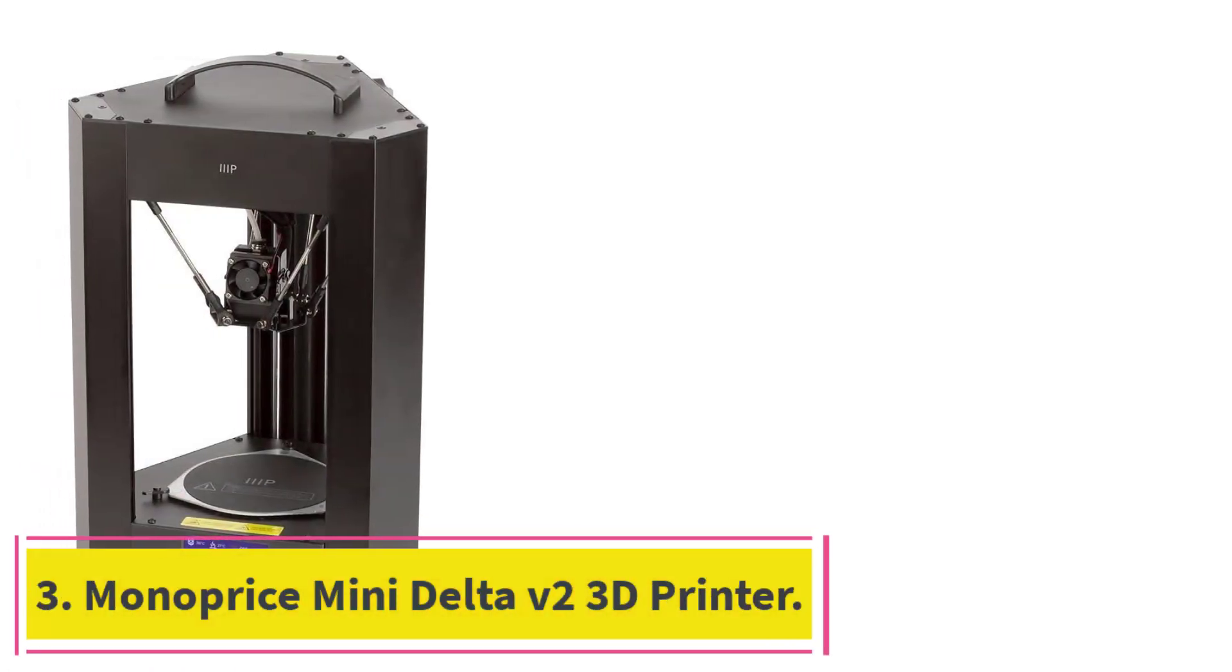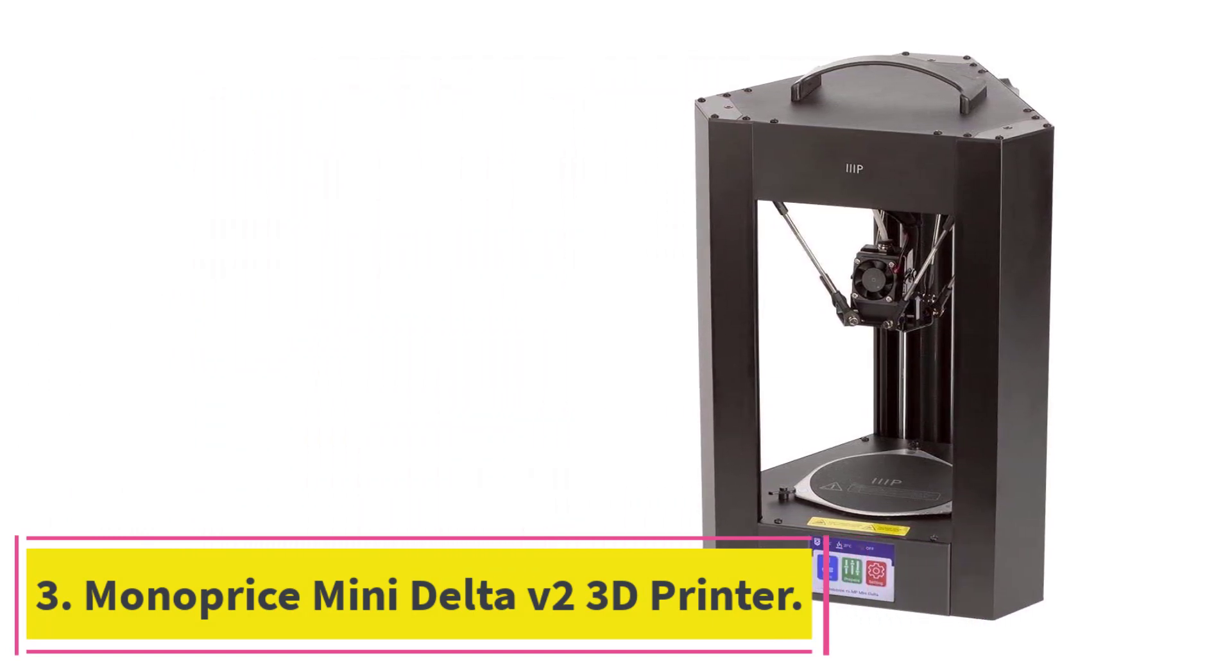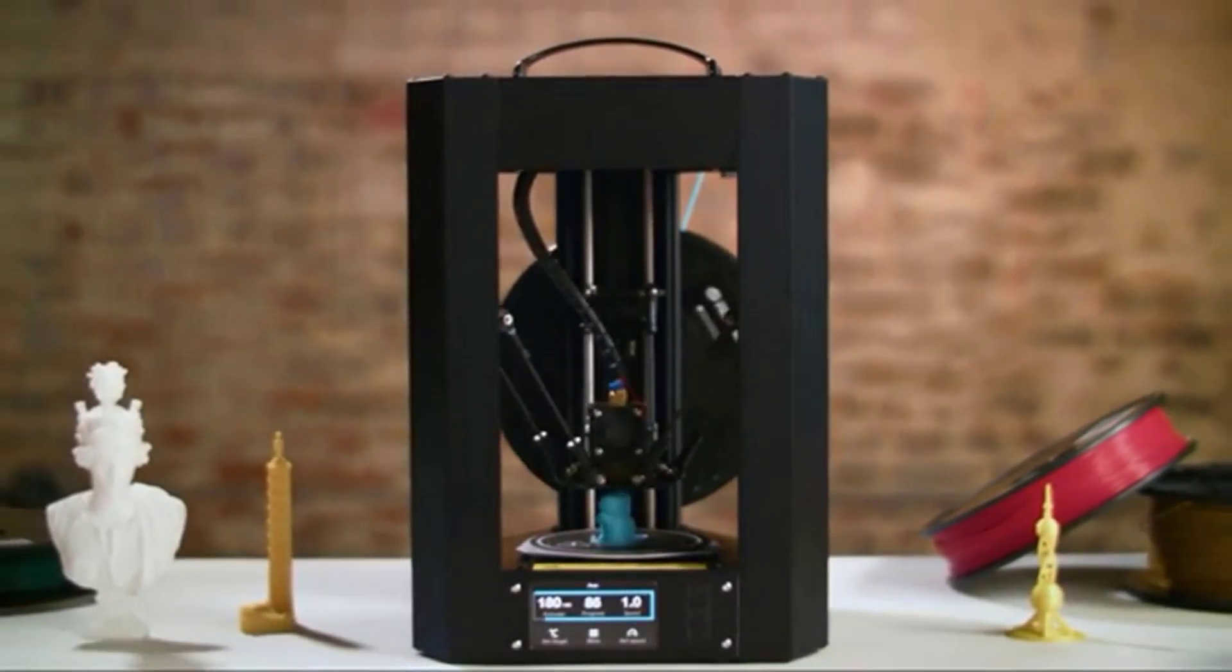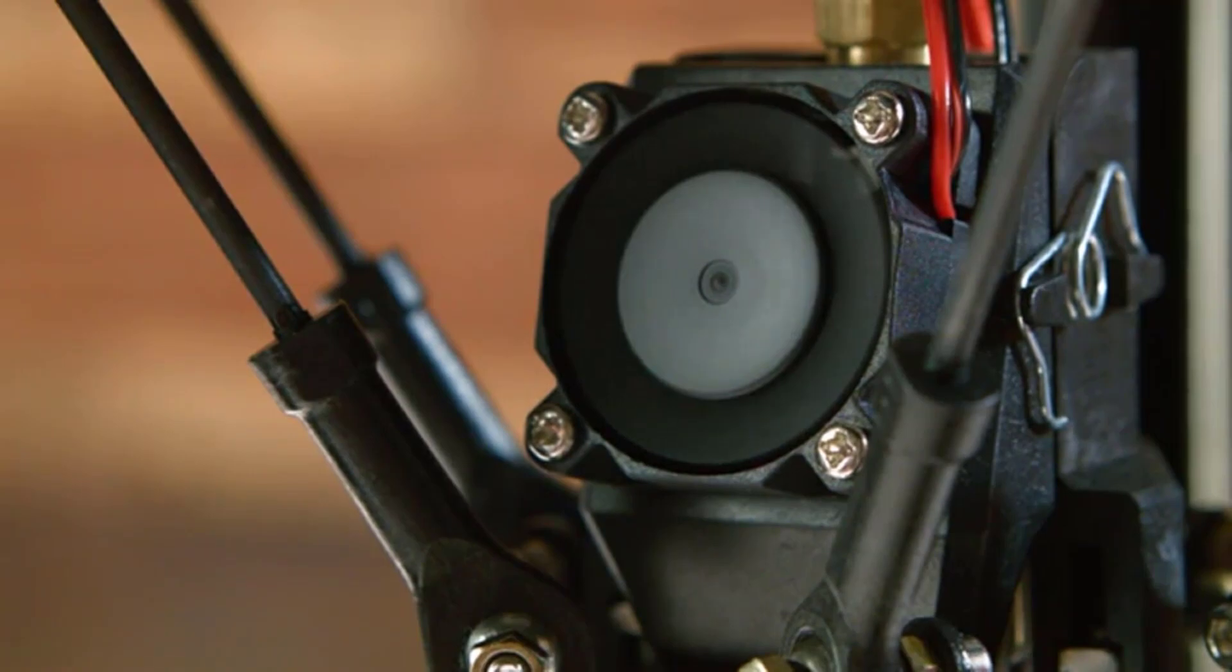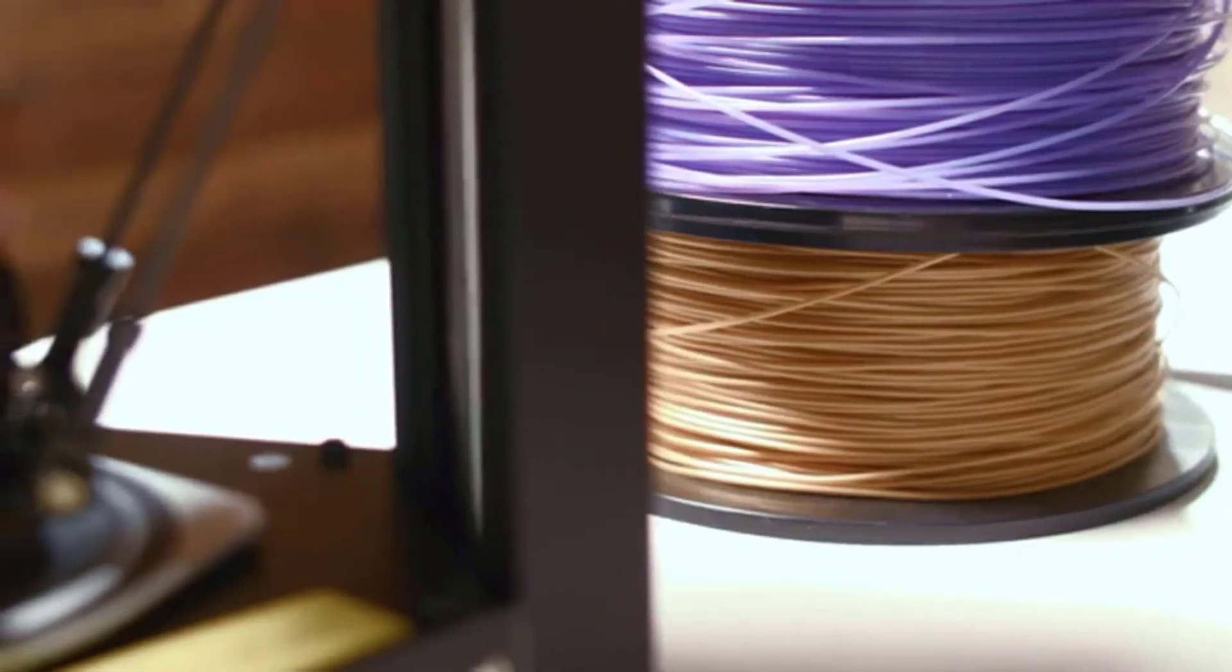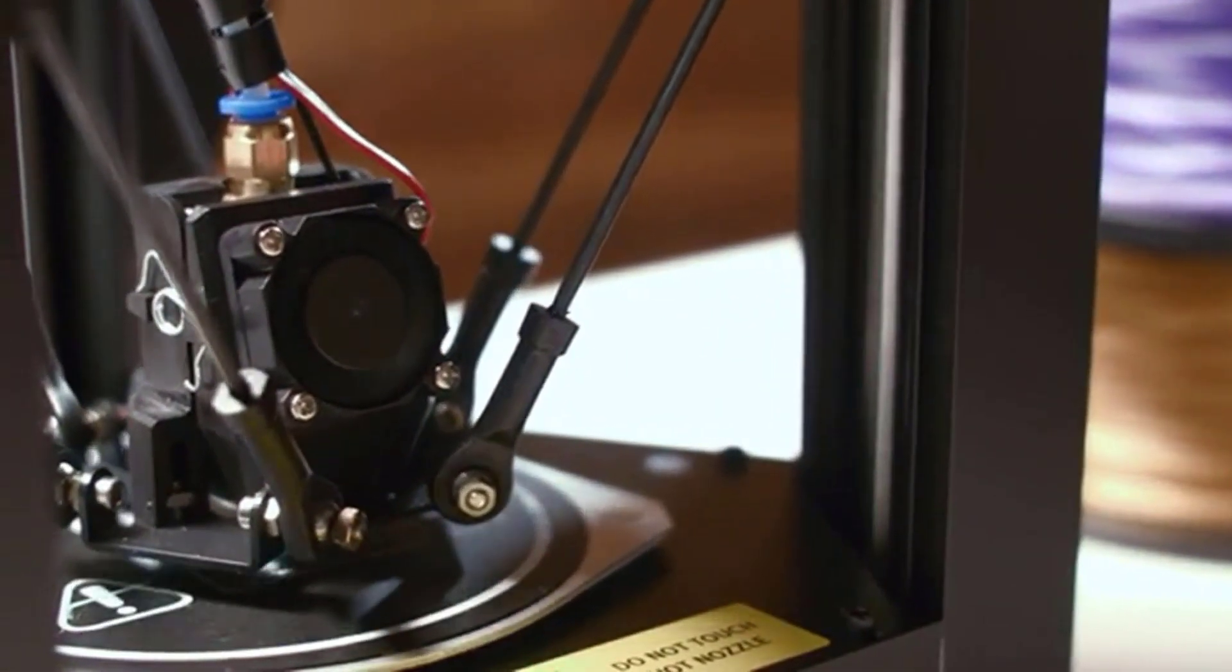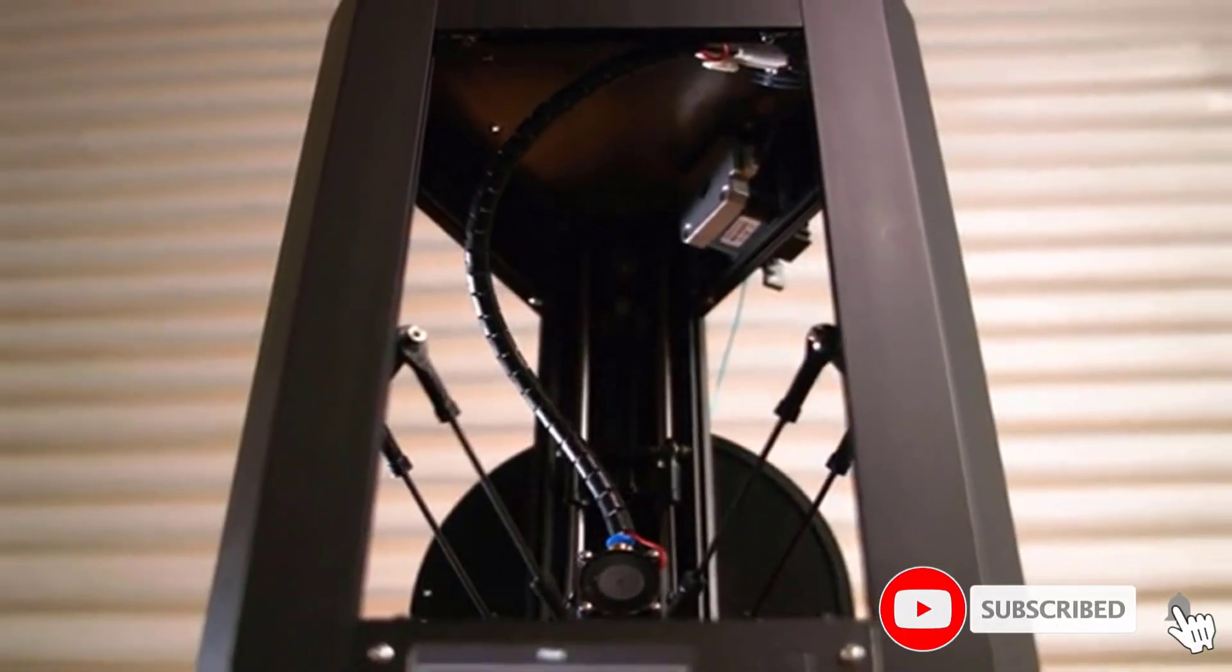At Number 3. Monoprice Mini Delta V2 3D Printer. Monoprice Mini Delta V2 is one of the most popular entry-level 3D printers on the market because of its unmatched printing speed. Unlike most printers below $200 with the Cartesian design, the Mini V2 has the Delta design. Its build volume is somewhat limiting but still enough for an entry-level printer for experimenting and learning.